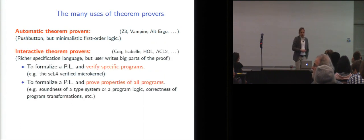But what I'm going to talk most about today is interactive theorem provers, like Coq. So here they give you much richer specification languages, but they compromise on the automatic part. So the user, a human, actually writes most of the proof. And then the tool will check it for correctness and exhaustiveness. And for instance, those tools make it relatively easy to formalize the semantics of a programming language and use that, for instance, to verify specific programs.